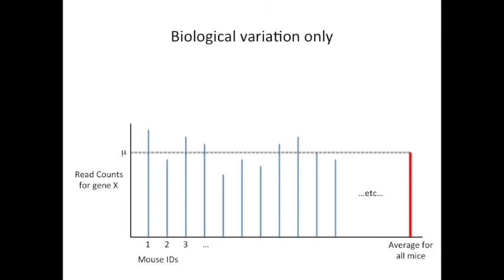Now, if we had an infinite budget and an infinite amount of time, we could sequence every single mouse on the planet and get an average for all mice. In this example, we use the Greek letter mu to represent the average for all mice. Now that we've calculated mu, the average for all mice, we can quantify the biological variation for each individual mouse as the difference between its read counts for gene X and mu, the average.